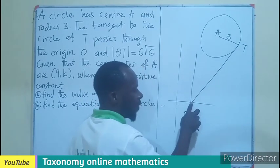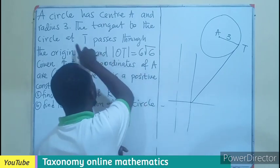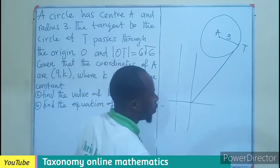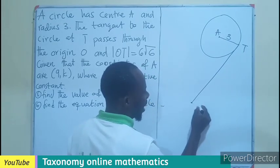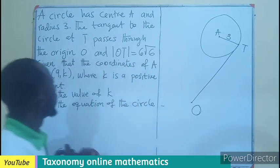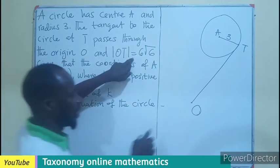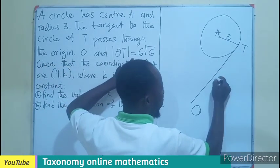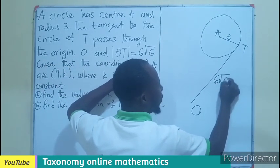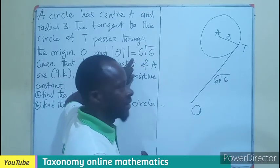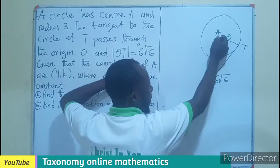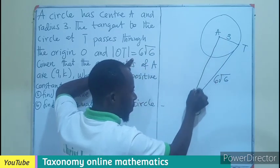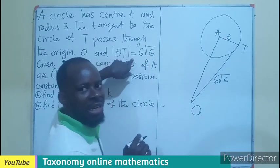So it is from the origin that the tangent is passing. So it means the origin here is going to be 0, 0, which I've been told the origin is O. So here I can indicate this point here as O. Where I know OT has been given as 6 root 6.